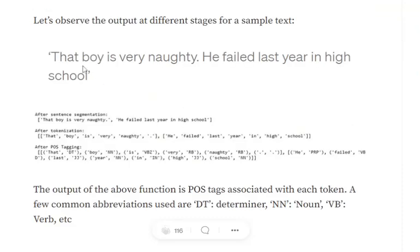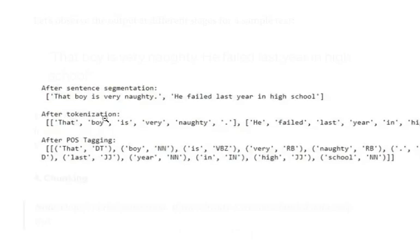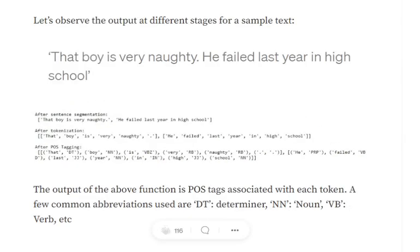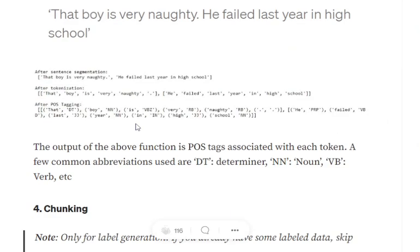For example, consider the sentences: 'That boy is very naughty. He failed last year in high school.' After sentence segmentation we get separate words for each sentence. After POS tagging we get a tag for each word — DT means determiner. Special tokens get no POS tag, 'in' gets preposition, 'failed' gets verb, and so on. This is the final output of the POS_tags function.